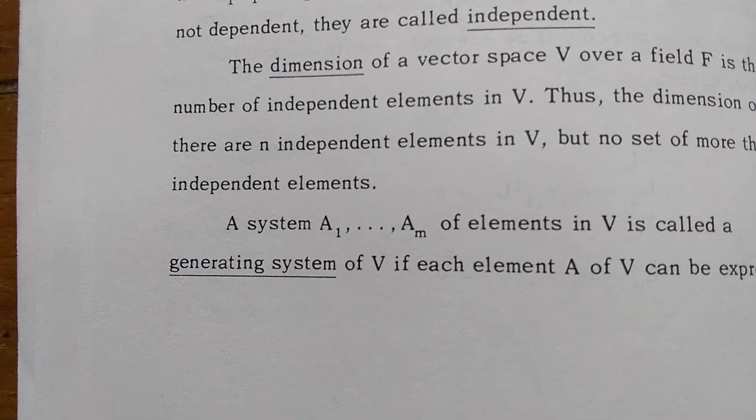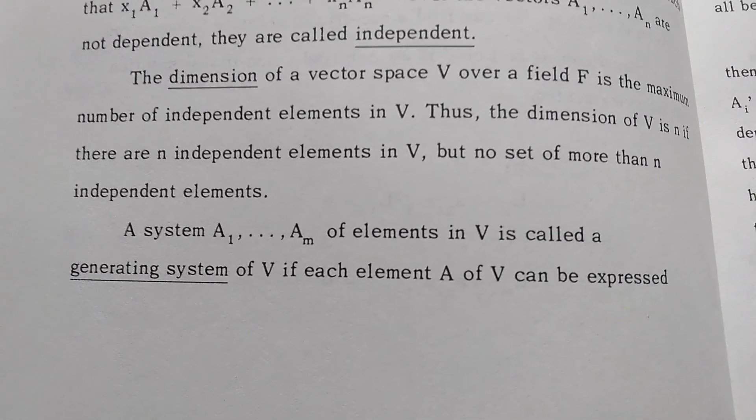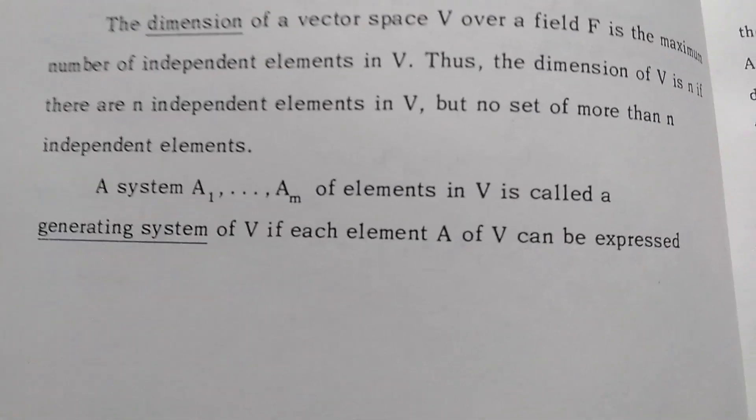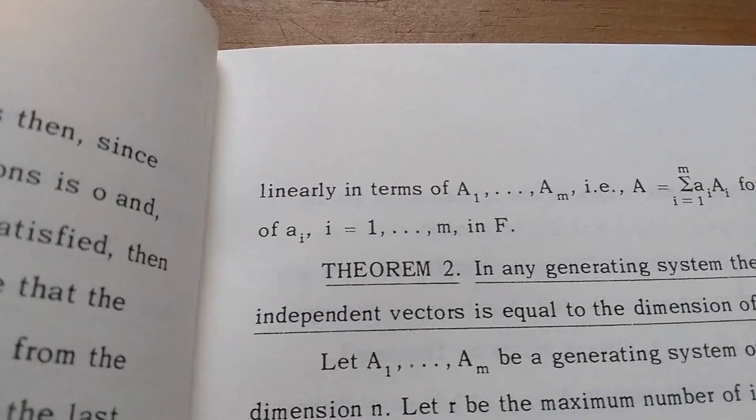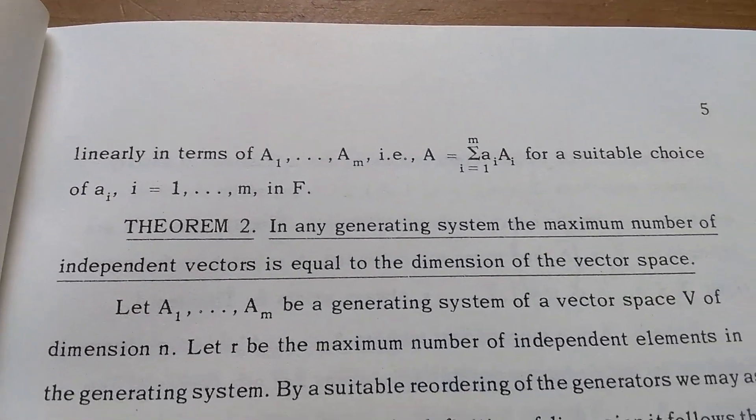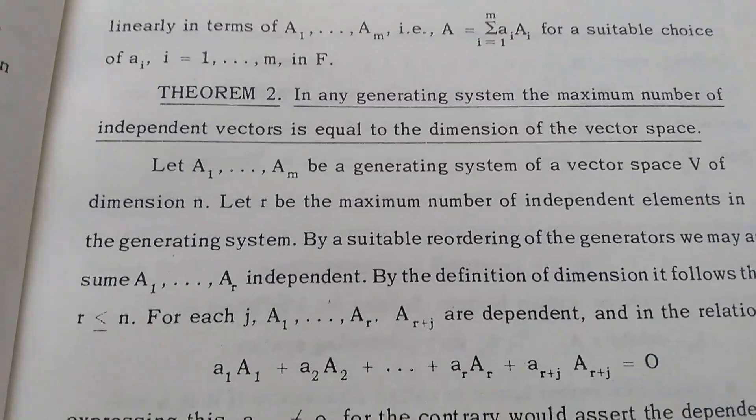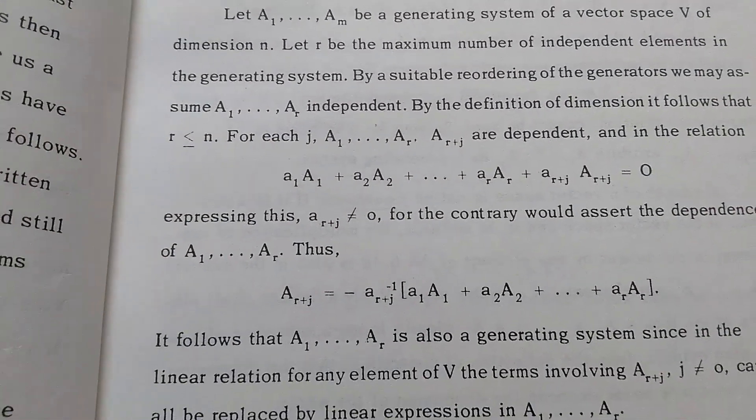A set of elements a₁ through aₘ is called a generating system if each element A of V can be expressed linearly in terms of those elements. He just moves through everything quite briefly.